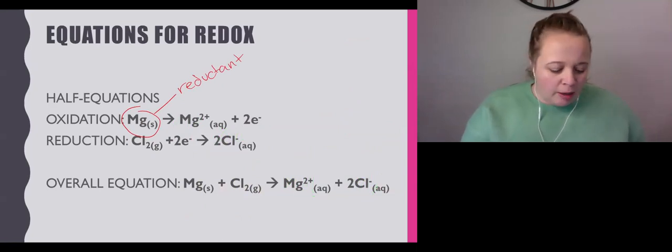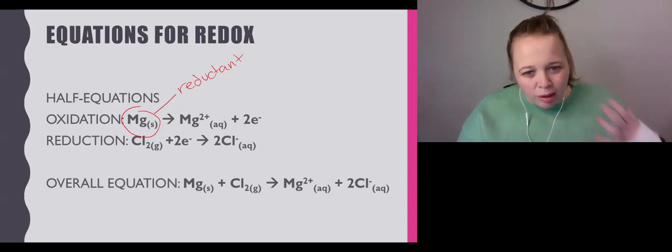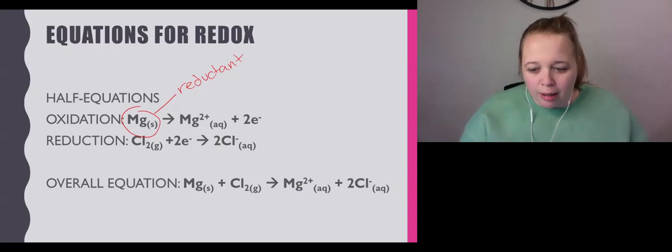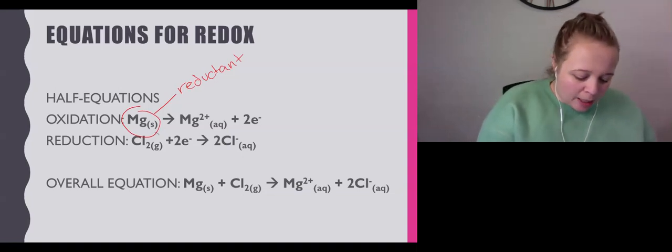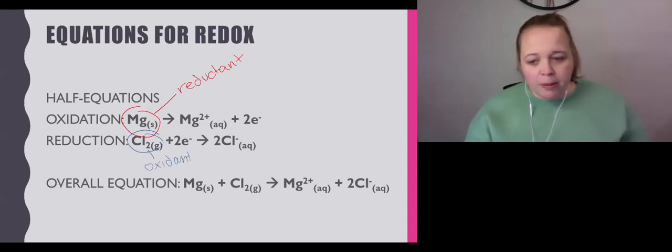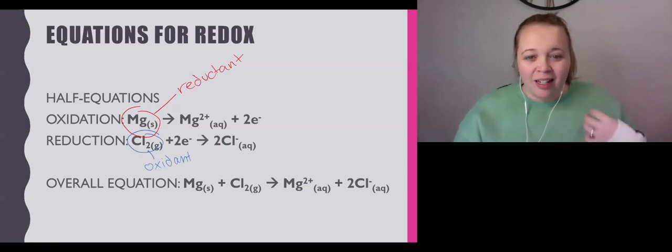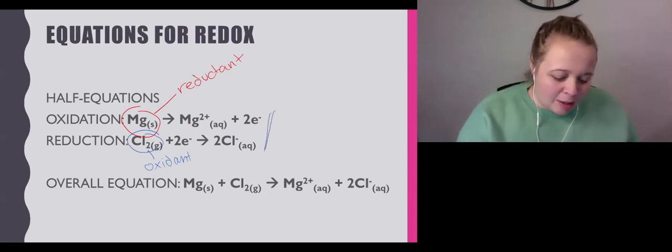We call the magnesium—the one that undergoes oxidation—the reductant. The opposite reaction is the reduction reaction, where Cl2 gas gains two electrons to become two Cl- aqueous. The chlorine gas has gained two electrons to become two chloride ions, so Cl2 gas is an oxidant. The substance that undergoes oxidation is the reductant; the substance that undergoes reduction is the oxidant. Very frustrating that it's reversed, but that's how it works.